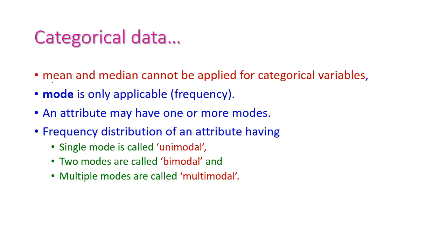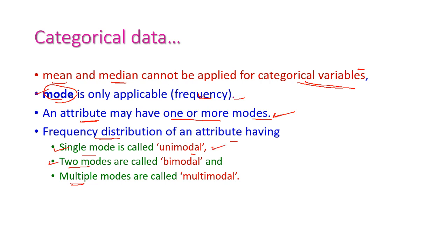Statistical computations like mean and median are not applicable for categorical variables, but mode is applicable. Mode is nothing but the frequency — that is, the number of items with the same value for a given attribute. An attribute may have one or more modes. Based on the frequency distribution, an attribute can be single-modal (unimodal), two-modal (bimodal), or multiple-modal (multimodal).